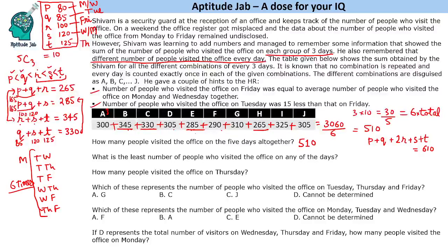We cannot uniquely determine Monday and Wednesday individually, but we can figure out all other days. The least number of people who visited on any day is 80. The number who visited on Thursday is 125. For which combination represents Tuesday + Thursday + Friday: that is 85 + 125 + 100 = 310, which is represented by g.